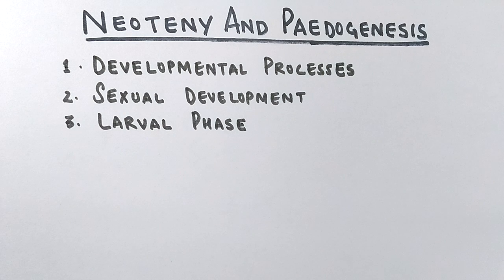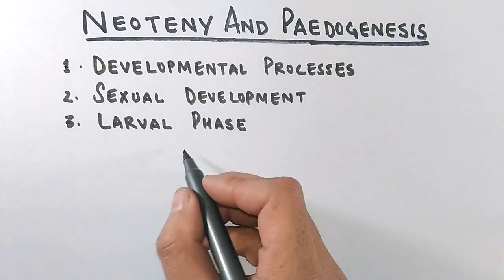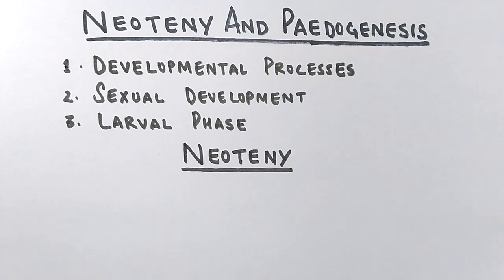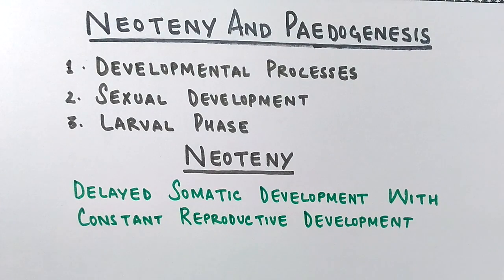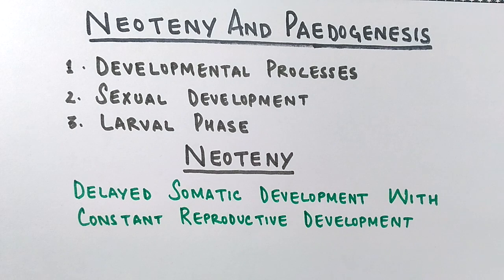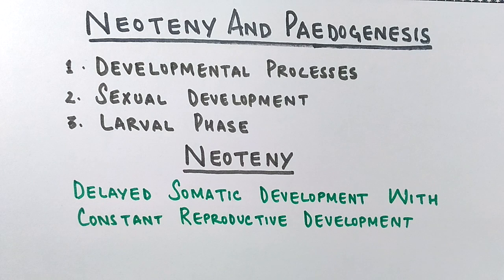Let's find out the difference between neoteny and pedogenesis, starting with neoteny. Neoteny is delayed somatic development but with constant reproductive or sexual development. There is a delay in the growth of somatic cells in the body except for reproductive parts. When somatic cell growth is delayed, physical maturation is delayed too, but the sexual development remains at a constant pace — meaning germ cells are produced at a normal rate. Although reproductive system parts are also made up of somatic cells, their growth remains constant in neoteny.